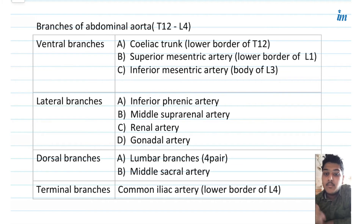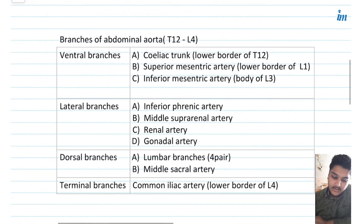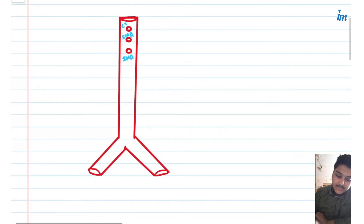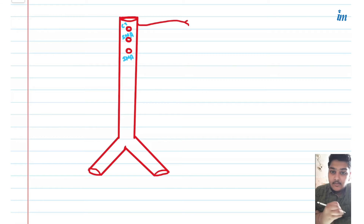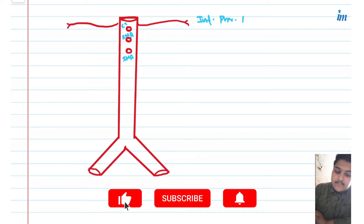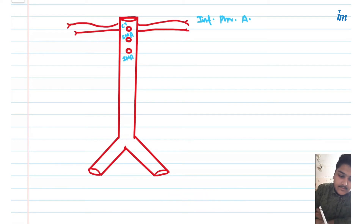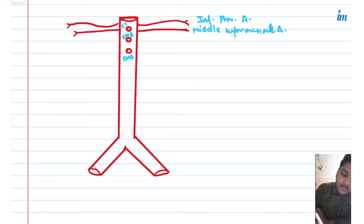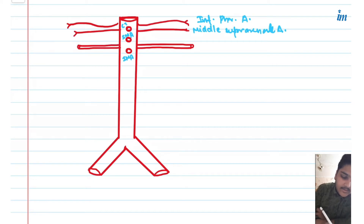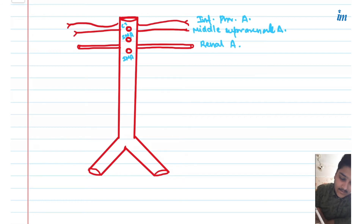The next category is lateral branches. We have four pairs of lateral branches: the inferior phrenic artery, which supplies the diaphragm; the middle suprarenal artery; the renal artery, which takes its origin just below the level of the superior mesenteric artery; and the gonadal artery.